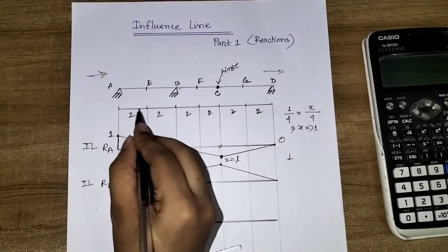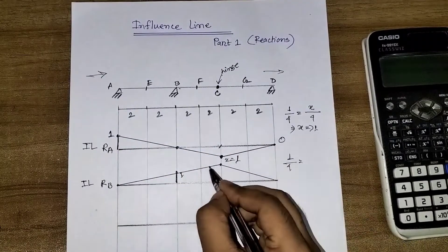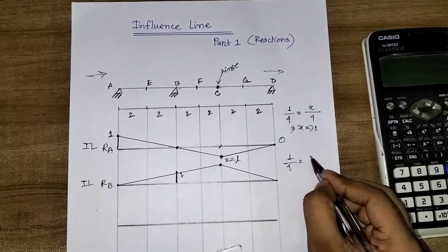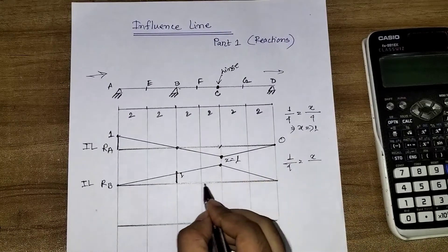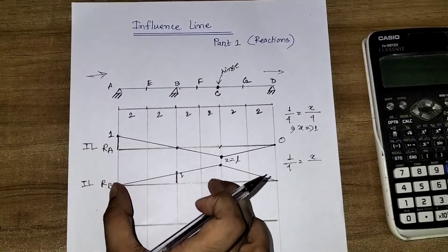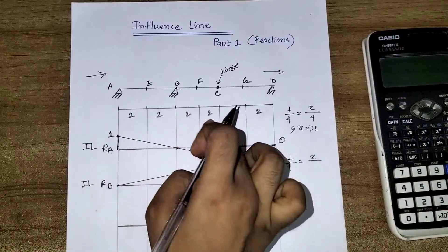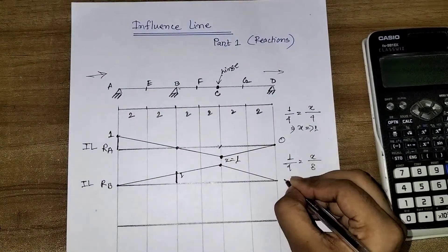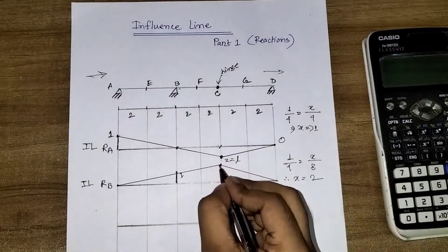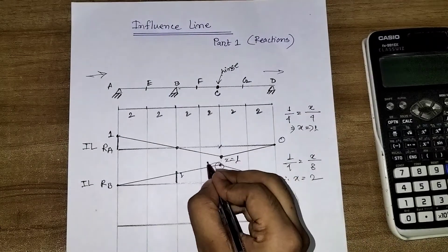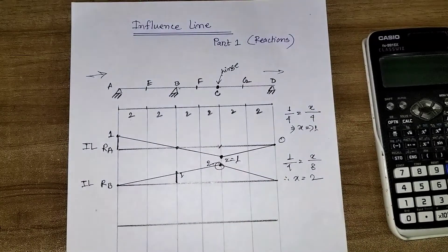One by distance of four is equal to point X divided by the total distance, which is two plus two plus two plus two equals eight. So X will be two for this.